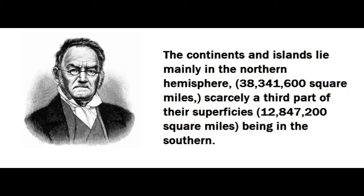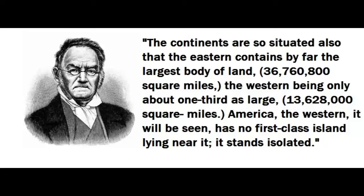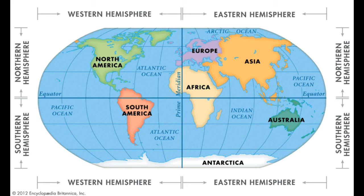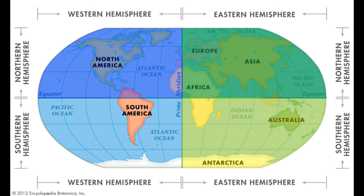The continents and islands lie mainly in the northern hemisphere — about 38 million square miles. Scarcely a third of their superficies, which is about 12 million square miles, are in the southern hemisphere. The continents are so situated also that the eastern contains, by far, the largest body of land — 36 million square miles — the western being only about one-third as large, at about 13 million square miles. America, the western, has no first-class island lying near it; it stands isolated. All this goes to show that the greatest land mass lies in the northern hemisphere, dividing the Earth one way, and in the eastern, dividing it in another.